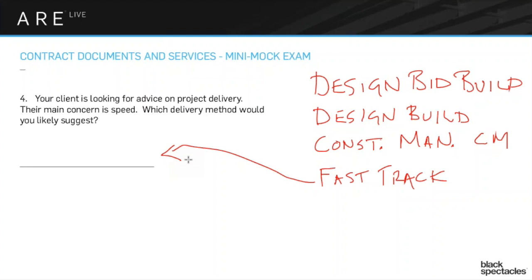The obvious disadvantage to designing while the building is going on is that you're going to make mistakes — you won't have all the information you need. For example, you might put the foundation in, but then decide down the road that you need plumbing in a different part of the building. Now someone has to go back and do it after the foundation is in instead of before, which costs a lot of extra money. So fast track is always more expensive because you have to make adaptations and change things.